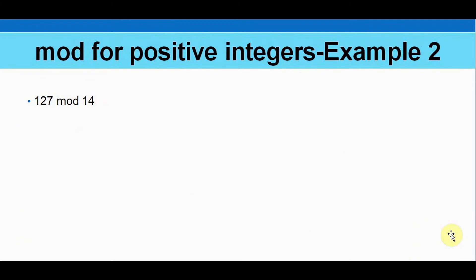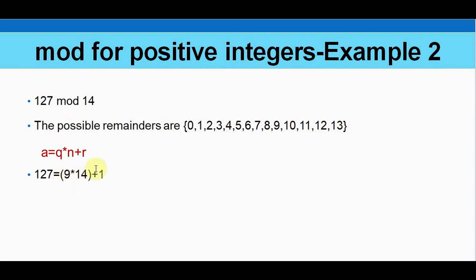We'll take another example 127 mod 14. In this case, the possible remainders when you divide it by 14, you will get any number from 0 to 13. So this 127 can be represented as 14 multiplied by the quotient 9 plus remainder 1. So 9 into 14, we get 126 plus 1. So the remainder in this case is 1, 127 mod 14 equal to 1.